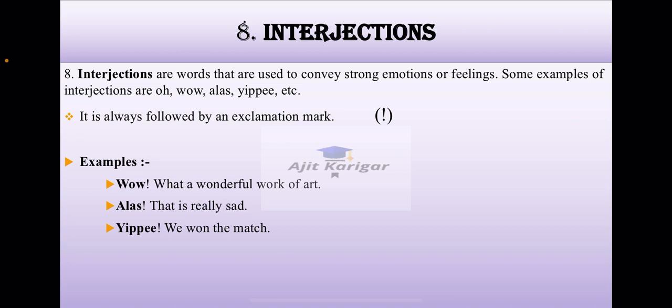This is the main point to remember in the interjection, that interjections are always followed with the exclamatory mark or exclamation mark. Interjections are used to show sudden feelings or sudden emotions which we show. When India wins the match, we say hooray. Those are the interjections. The examples are: Wow! What a wonderful work of art. Alas! That is really sad. Yippee! We won the match. These are the interjections.